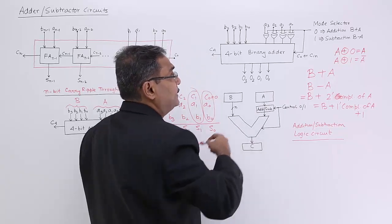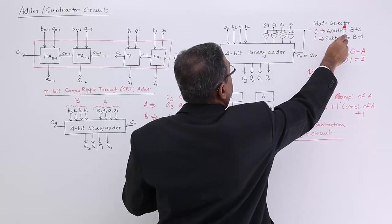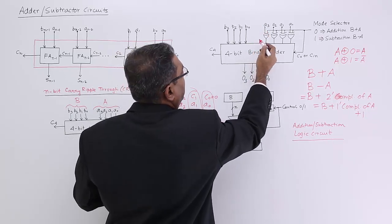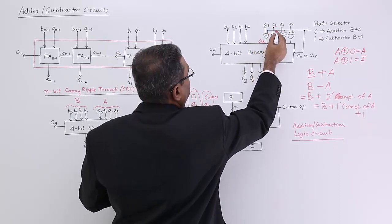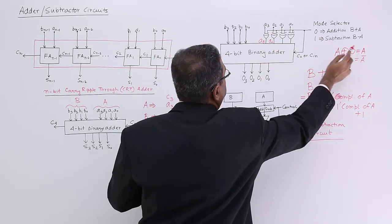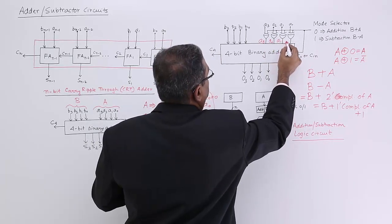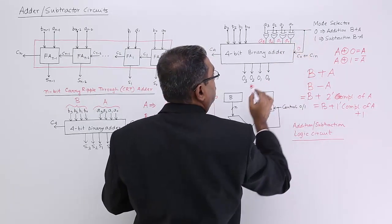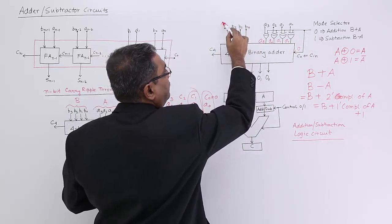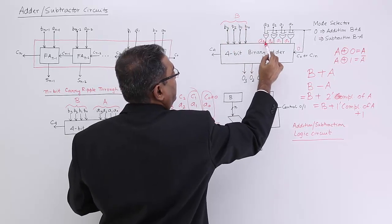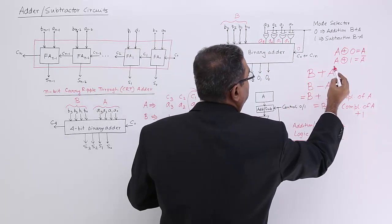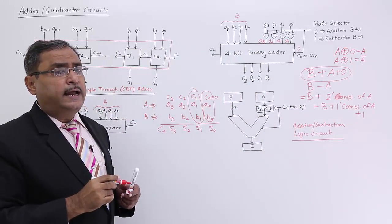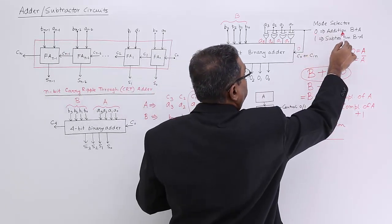This is the mode selector. If I put 0 here, then A3 XOR 0 gives A3, A2 XOR 0 gives A2, A1 XOR 0 gives A1, A0 XOR 0 gives A0, because A XOR 0 equals A. This 0 will also come down as the initial carry. So what are you getting? You are getting B plus A plus 0, which is B plus A. It is working as an adder. So mode selector value 0 decides addition.